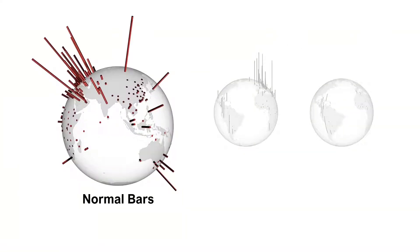When we compare the normal bars idiom with other length proportional visualizations, we did not find any differences in accuracy despite the perceptual shrinking of normal bars. This could be attributed to the fact that the rotatable globe allows readers to align bars on the horizon for easier comparison. Study participants were also more confident with normal bars and preferred their aesthetics.